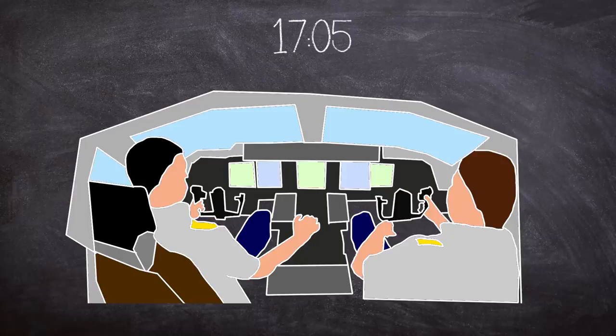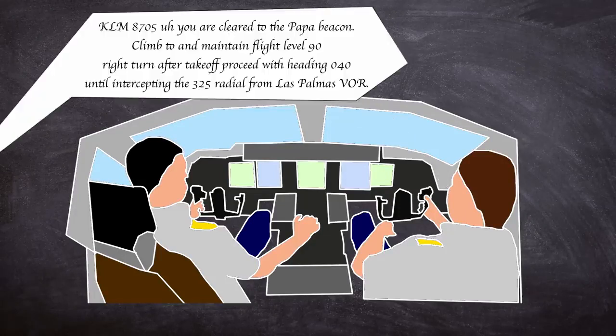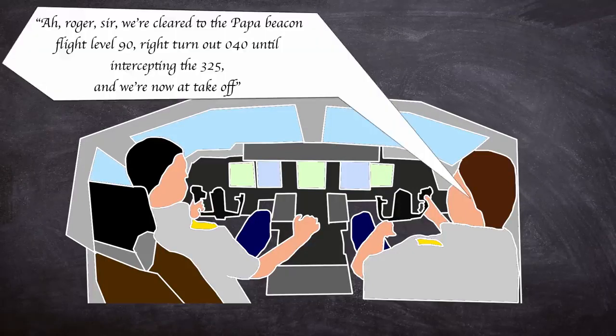At 1705, the KLM confirmed it was ready for takeoff and awaiting ATC. Soon after ATC informed the KLM what their route was to follow after takeoff, but no authorization for takeoff was actually given. The KLM replied and confirmed the information given, but added we are at takeoff, which is a non-standard message.